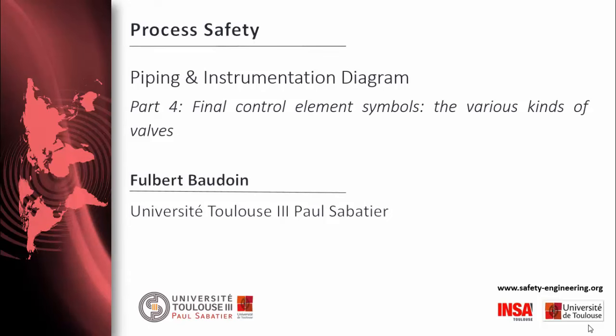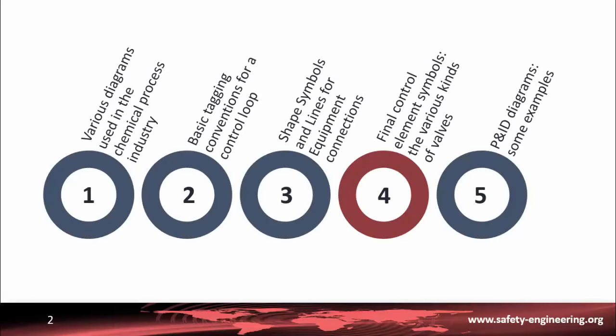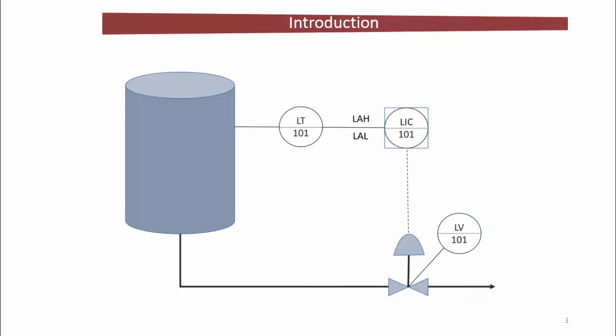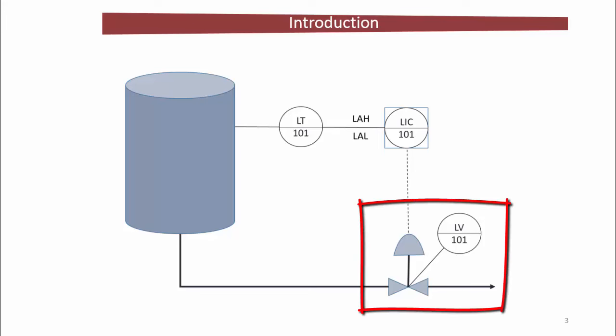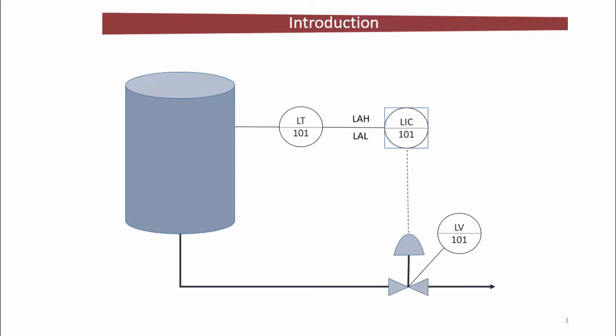Hello, this is Fulbert here. We are going to take a closer look at specific types of valves and their symbols. Let's take another look at this control loop. We have already explained the details and the tagging — for example, LV means the valves that control the level inside the tank. The associated symbols mean that the valve used here is a spring diaphragm valve without a positioner. In this part, we are going to focus on the different kinds of valves in the chemical process industry as well as their symbols and associated devices.